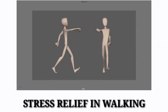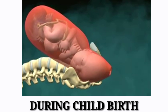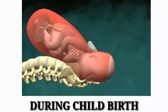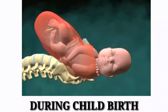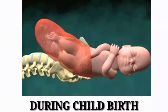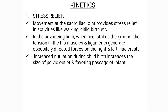Movement at the SI joint allows some amount of stress relief within the pelvic ring. While walking, alternating movements of the legs produce alternating nutation and counter-nutation at the SI joint. This generates tension in hip muscles and ligaments, producing oppositely directed torsions on the right and left iliac crests. These torsions increase with walking speed and help dissipate damaging forces developed during walking.